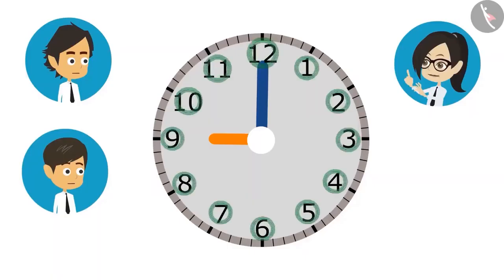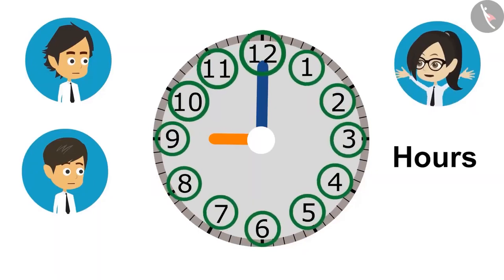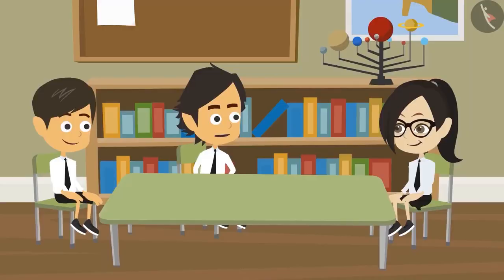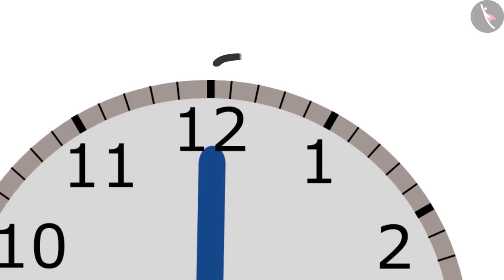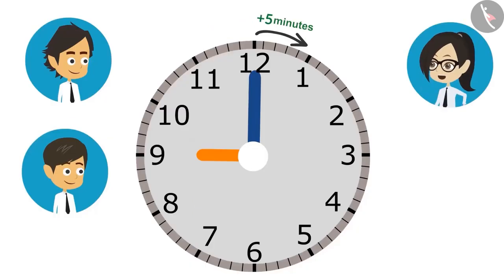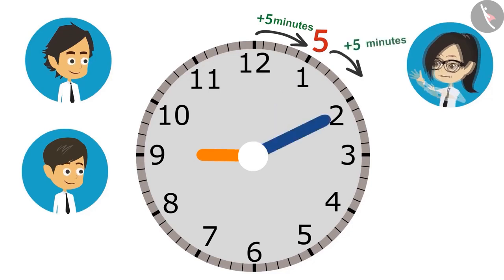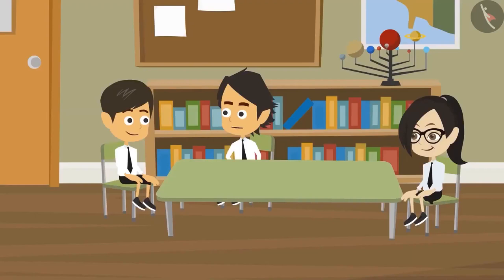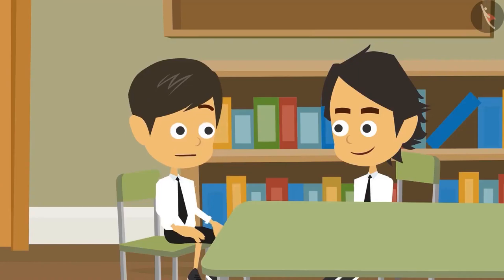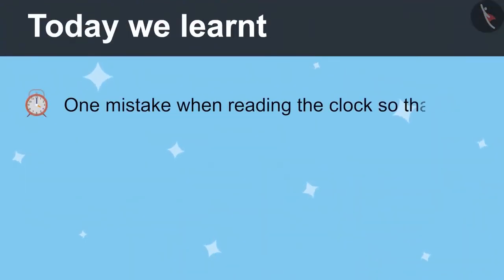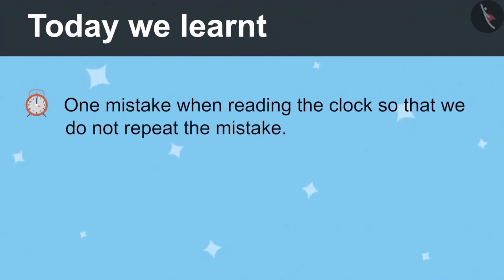So how do we read the correct time? The numbers written on the clock show the hours, not the minutes. The minute hand takes 5 minutes to go from one number to another. That's why when the minute hand moves from 12 to 1, it is not 1 minute but 5 minutes. When the minute hand reaches 2 from 12, it has been 10 minutes. This means it takes 10 minutes from home to reach school — and that is what I was trying to tell you. Today we learned about one mistake when reading the clock so that we do not repeat it.